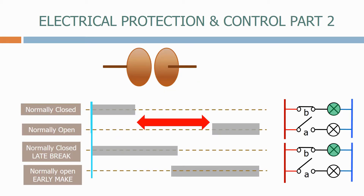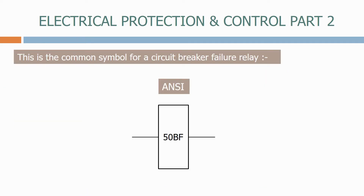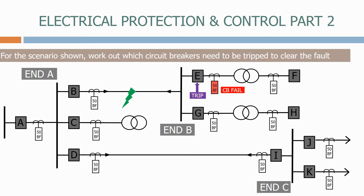In the next section we look at circuit breaker protection. We start by looking at the circuit breaker auxiliary switches, which are a key component in any protection system. We then look at the main circuit breaker protections including trip circuit supervision. The circuit breaker is critical for clearing faults on the electrical system, but sometimes things go wrong and the circuit breaker fails to clear the fault. In the next section we will look at how we detect this critical situation and what actions we need to take to ensure the electrical system is protected from a collapse.